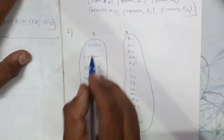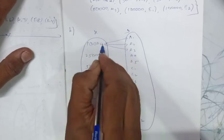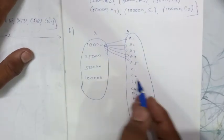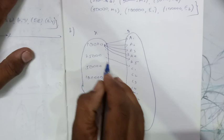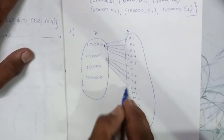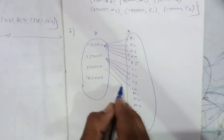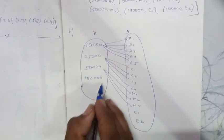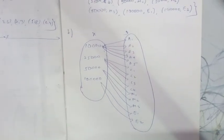Now drawing the arrows: 10,000 arrows go to A1, A2, A3, A4, A5. Then 25,000 arrows go to C1, C2, C3, C4. Next, 50,000 arrows go to managers M1, M2, M3. And 1 lakh arrow goes to executive officers E1, E2. This completes the arrow diagram.